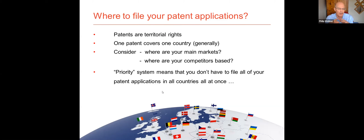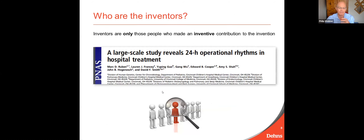There is a system — the priority system — that means you don't have to file all your patent applications in all different countries around the world all at once, which is very useful. But before we talk further about where to file and how to do that, we need to think about a few other things.